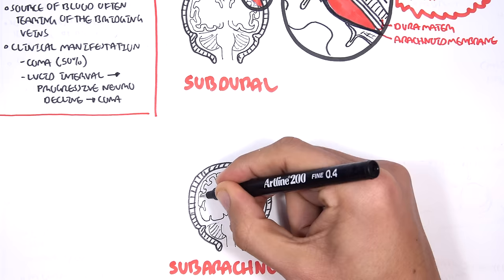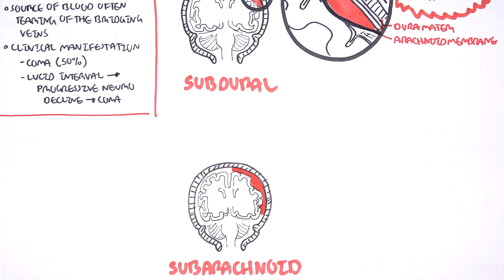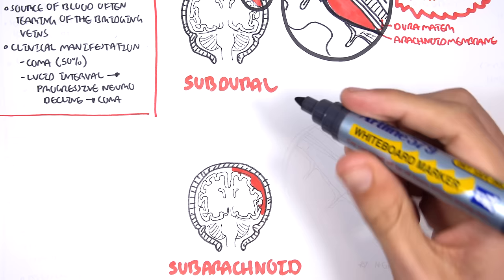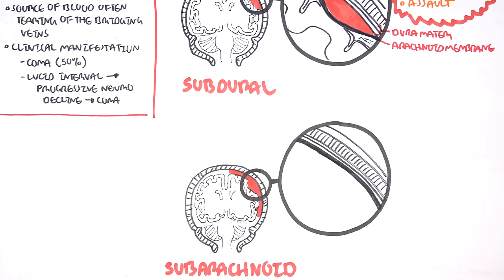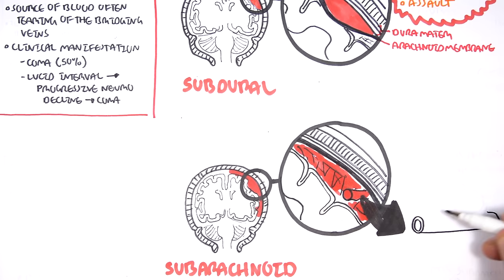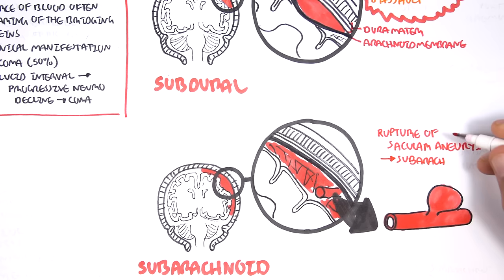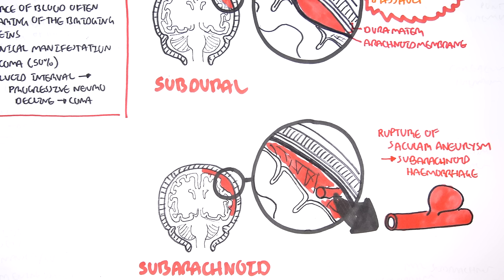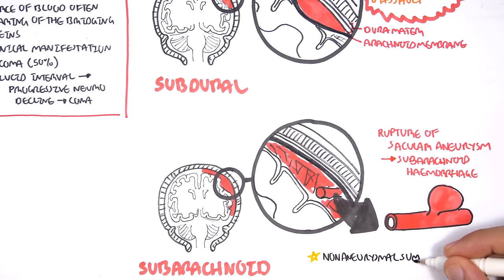The final type of extra-axial hemorrhage is subarachnoid hemorrhage. As the name suggests, it occurs within the subarachnoid space. Because it occurs there, the blood can occupy the whole area and essentially engulf the whole brain. It is often a result of a cerebral artery aneurysm — specifically, the most common cause is rupture of a saccular aneurysm, where a sac-like outpouching forms on the artery and then ruptures, resulting in hemorrhage. There are also non-aneurysmal subarachnoid hemorrhages, though we won't discuss those in detail.